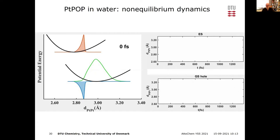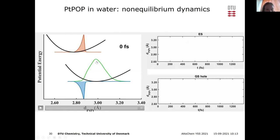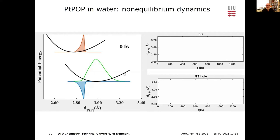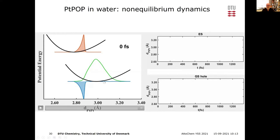The second question: could you explain the difference in the Pt-pop results between excitation at the center versus at the edge of the absorption band? If you excite at the center, you excite in the middle of the ground state distribution — the hole is symmetric, so on average the structure doesn't change, giving vibration mainly in the excited state. But if you excite on the wing, you excite at the bottom of the excited state well while the hole is on a slope in the ground state, so the hole vibrates and shows up strongly in the difference scattering signal.